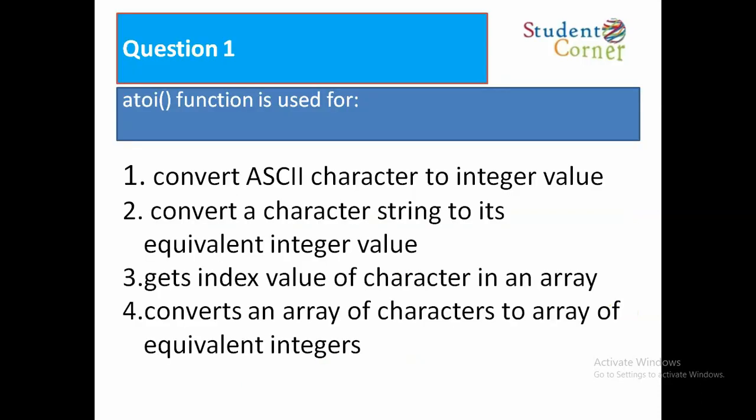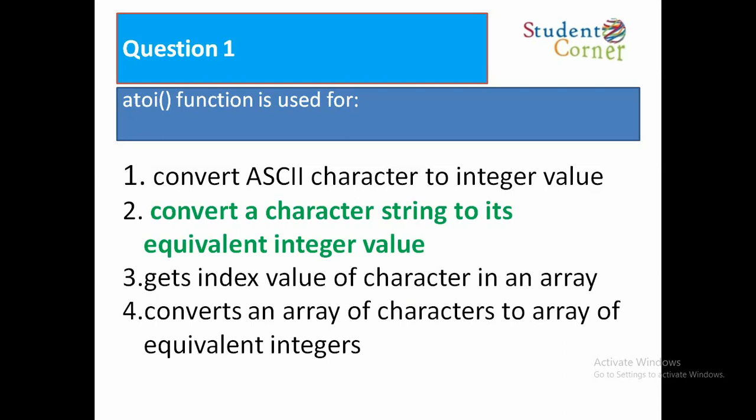Question number 1: atoi() function is used for: Option 1, convert ASCII character to integer value. Option 2, convert a character string to its equivalent integer value. Option 3, gets index value of character in an array. Option 4, converts an array of characters to array of equivalent integers. The answer is convert a character string to its equivalent integer value.